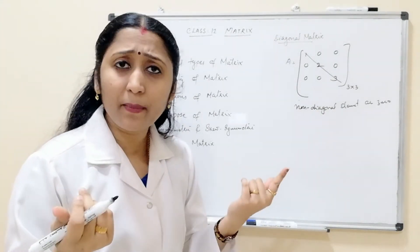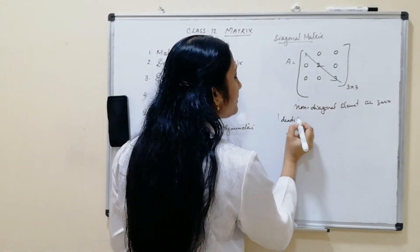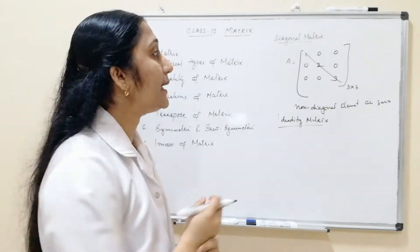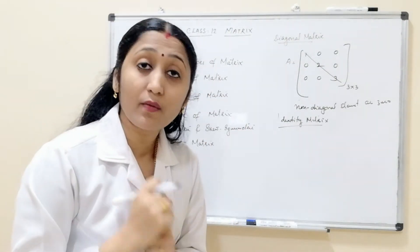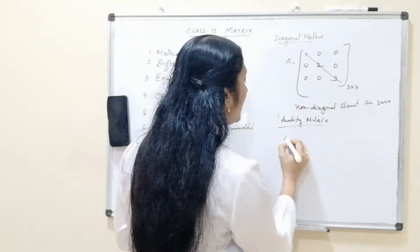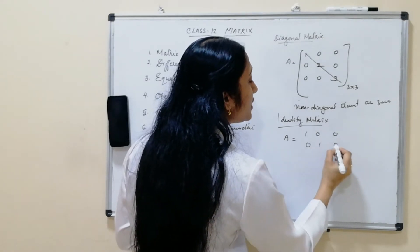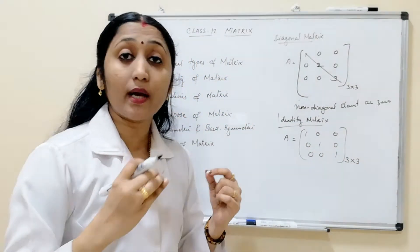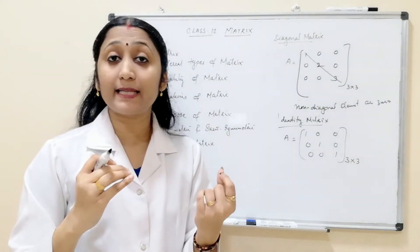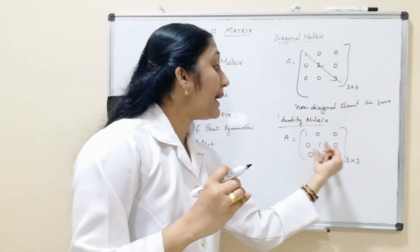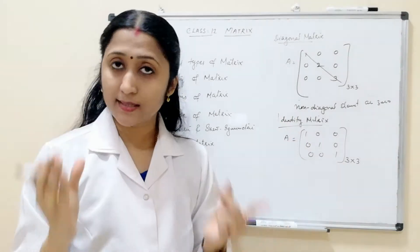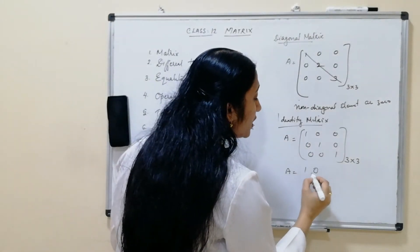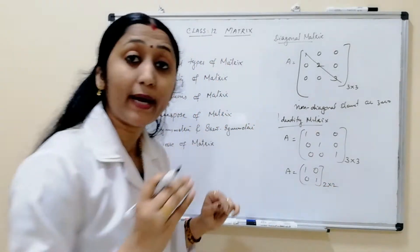Next is the identity matrix. An identity matrix is very simple: the diagonal elements are all 1 and the non-diagonal elements are zero. For example, A = [1, 0, 0; 0, 1, 0; 0, 0, 1] is the 3×3 identity matrix. Similarly, [1, 0; 0, 1] is the 2×2 identity matrix. An identity matrix can be of any order.